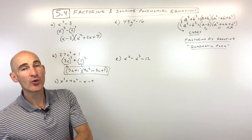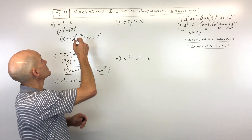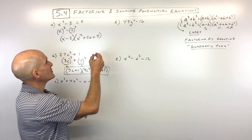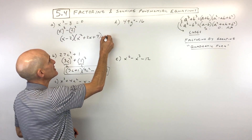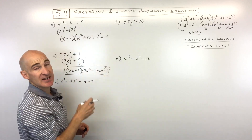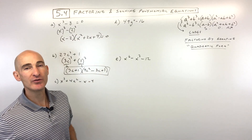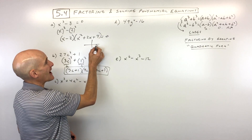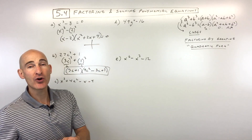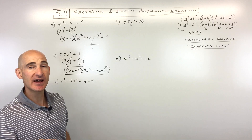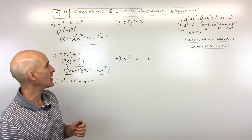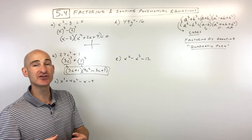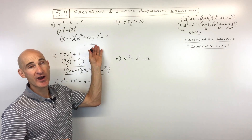Now if you were solving these equations — say this was equal to zero — after factoring you would take each factor and set it equal to zero and solve. That's how you find your zeros, which represent the x-intercepts where a polynomial crosses the x-axis. We'll use that later in this chapter, but for now we're reviewing factoring so you have those skills to find the zeros.